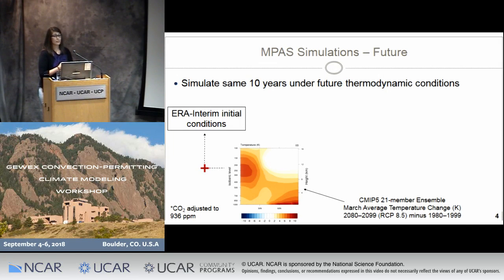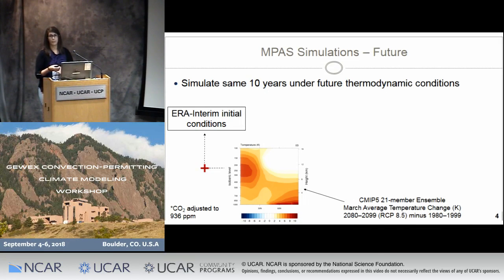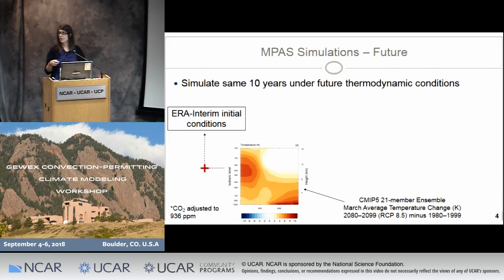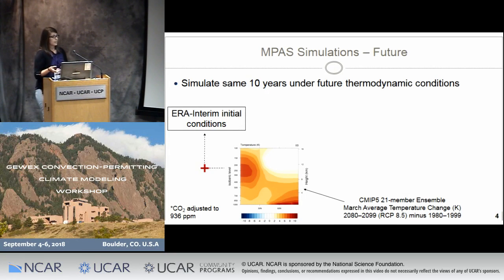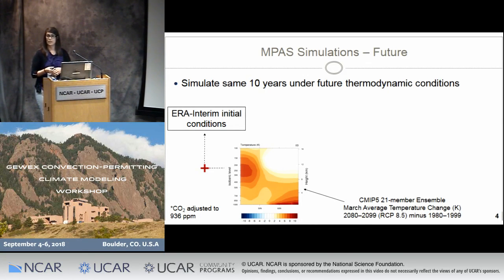To account for the effects of climate change, we're essentially simulating the same 10 years under future thermodynamic conditions — this is along the lines of pseudo-global warming. We're calculating temperature deltas from a 21-member CMIP5 ensemble and then adding those to the initial conditions. These temperature deltas are calculated by subtracting the 1980–1999 average temperature from the 2080–2099 average temperature, with an example shown here for the month of March. We're applying those temperature deltas to the initial conditions at all atmospheric levels, all soil levels, and sea surface temperatures, and also adjusting CO2 to match the RCP 8.5 scenario.